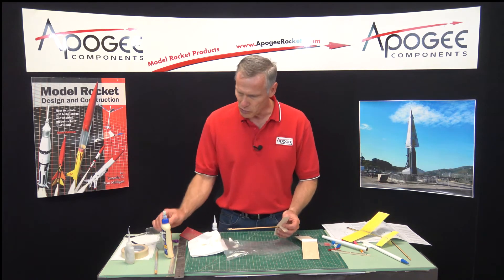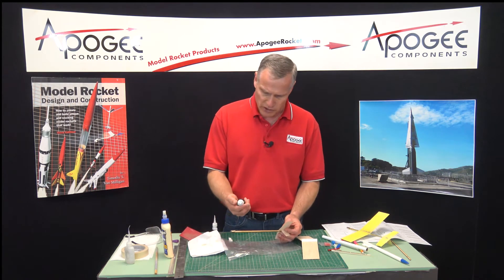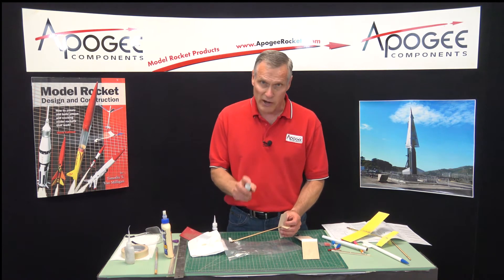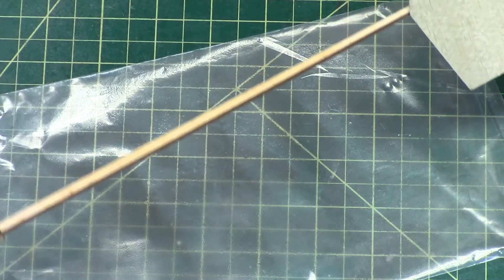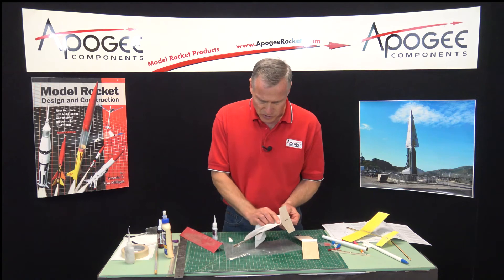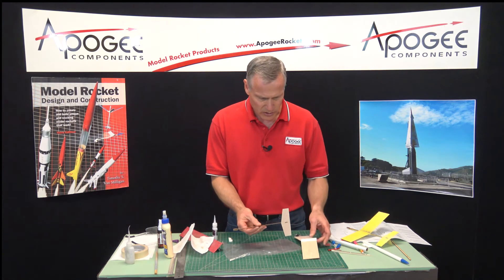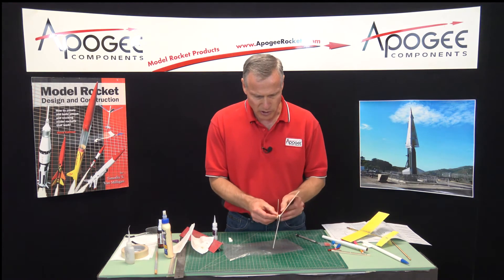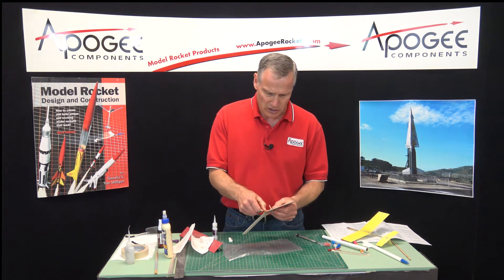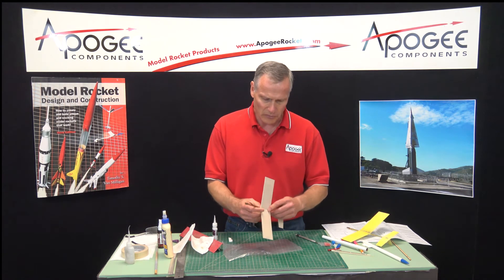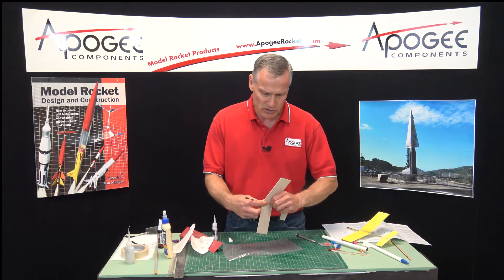Now if you have the super glue accelerator, this brand is called Insta-Set, but there's several different brands and you can get this at a hobby store. You just spray it. One spritz. And just wipe it. And now it's completely hardened. And now when I put it on, hopefully it's a little bit stiffer. Yeah, that's much stiffer. It will move, but I want it so that it doesn't slide around on me so easily.